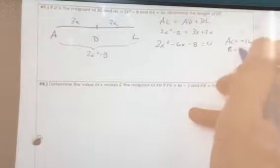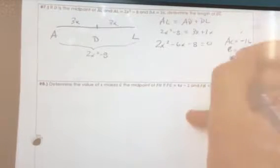So then we're looking for numbers that add to equal negative 6 and multiply to negative 16. That's 8 and 2, where the 8 is negative.